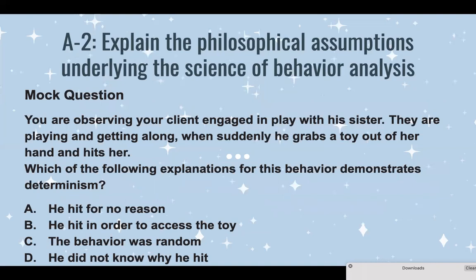In the last video for A-1, we went over how to break down exam questions using process of elimination. Here's a practice question: You are observing your client engaged in play with his sister — getting along nicely — when suddenly he grabs a toy out of her hand and hits her. Which of the following explanations for this behavior demonstrates determinism? A: he hit for no reason. B: he hit in order to access the toy. C: the behavior was random. D: he didn't know why he hit.